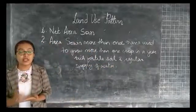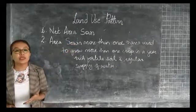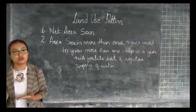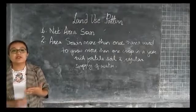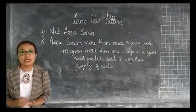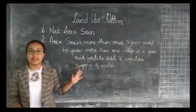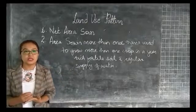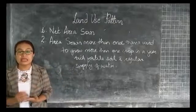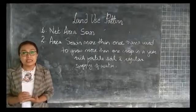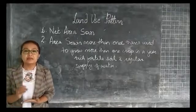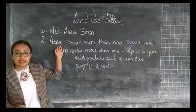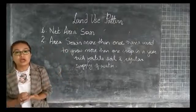The percentage of area sown more than once is rather low in India compared to the whole. This happens basically due to the large percentage of infertile soil, deficiency of moisture, and insufficient use of land. Almost all the arable land has already been brought under the plough. The only way left to increase agricultural production is to increase the intensity of cropping by increasing the area sown more than once.